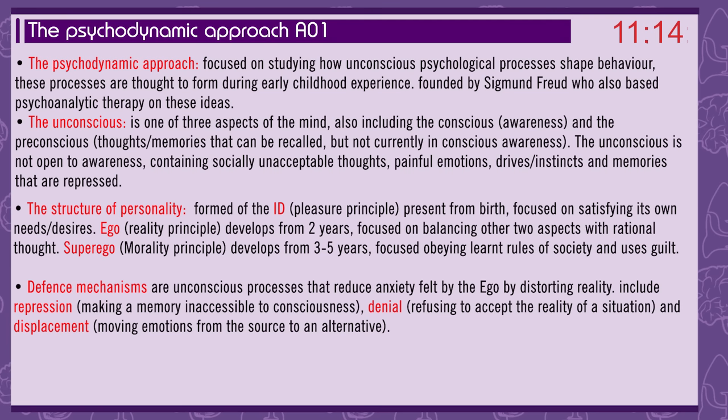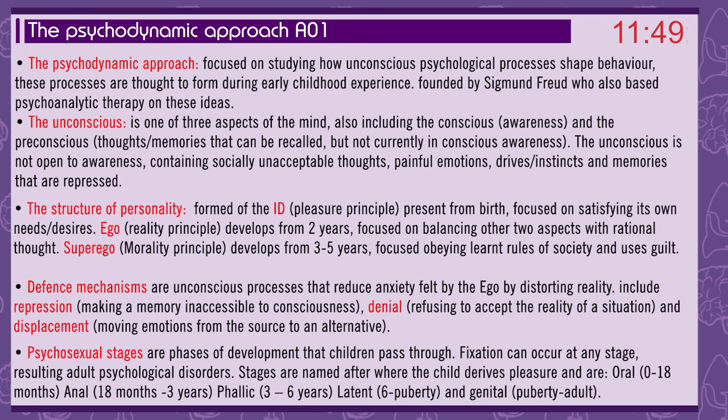The structure of personality is formed of the id — the pleasure principle, present from birth, focused on satisfying its own needs; the ego — the reality principle, developed from two years, balancing the other two aspects with rational thought; and the superego — the morality principle, developed from three to five years, focused on obeying learned rules of society and expressed as guilt. Defence mechanisms are unconscious processes that reduce anxiety felt by the ego by distorting reality, including repression, denial, and displacement — moving emotions from the source to an alternative.